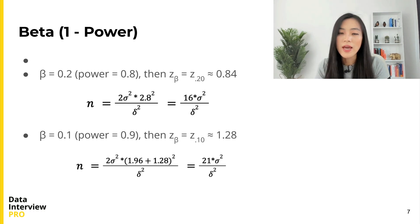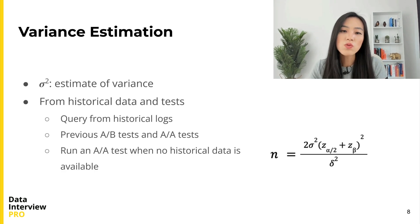It means that increasing our sample size can give us greater power to detect differences. The smaller β, the greater power and more samples we need. The next one is variance. Variance estimation should be done before running the experiment.